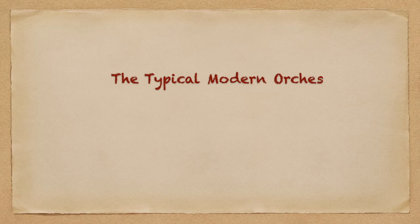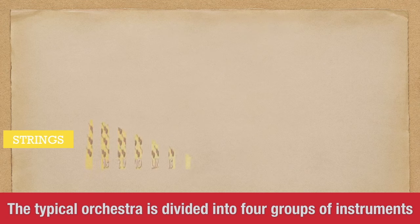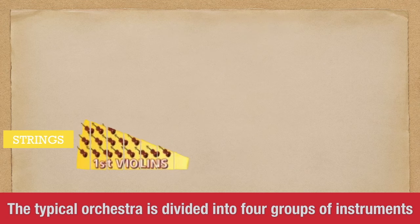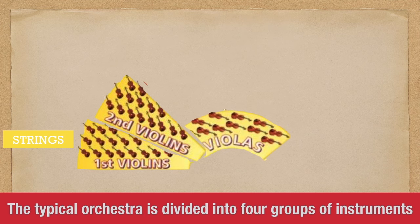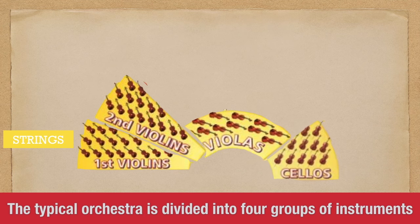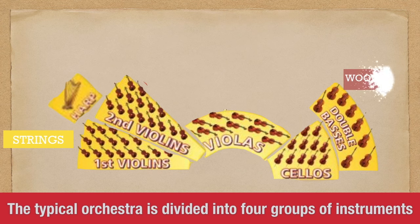The typical orchestra is divided into four groups of instruments. The strings family includes the first violins, the second violins, violas, cellos, double basses, and the harp.